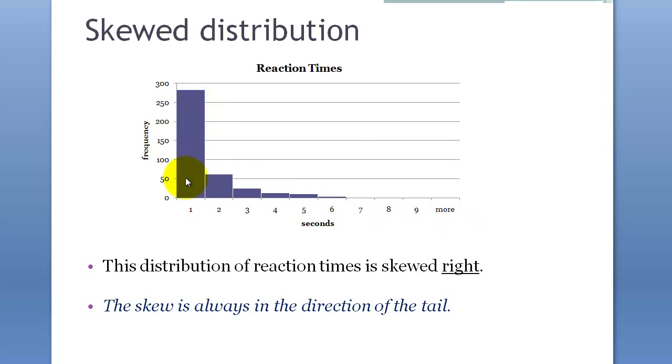The skewed is always in the direction of a tail. This is a tail. Because skewed means distorted in certain directions.